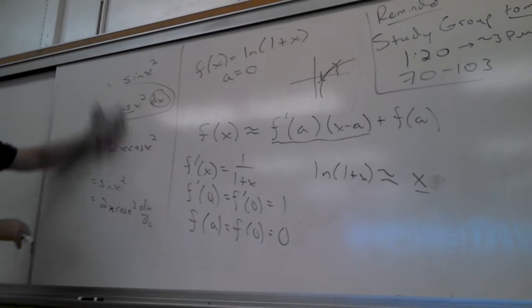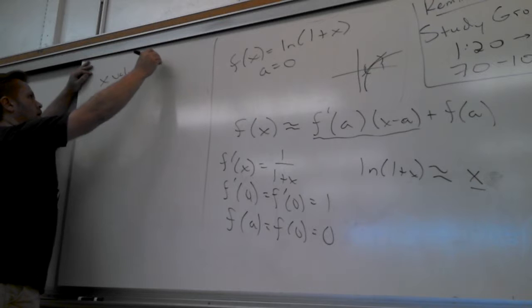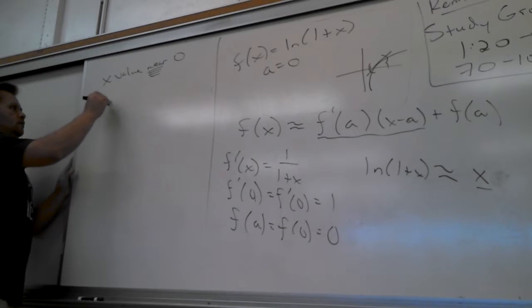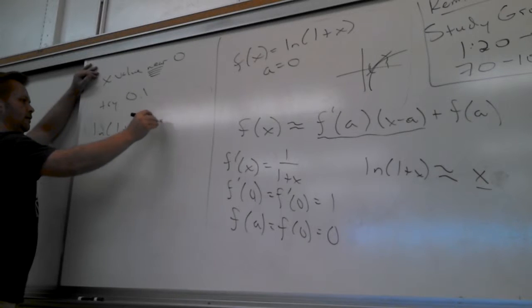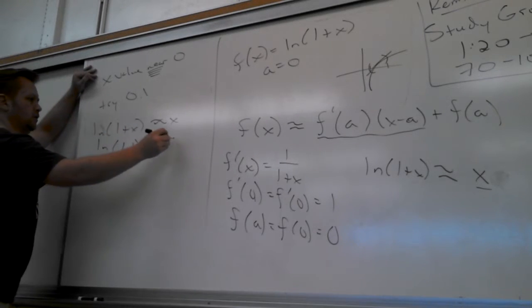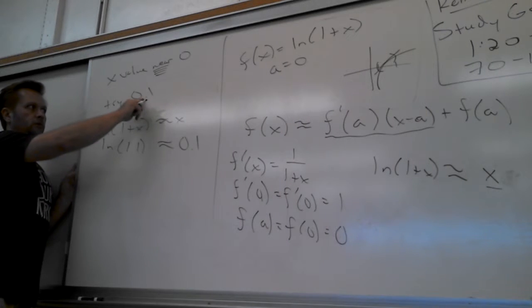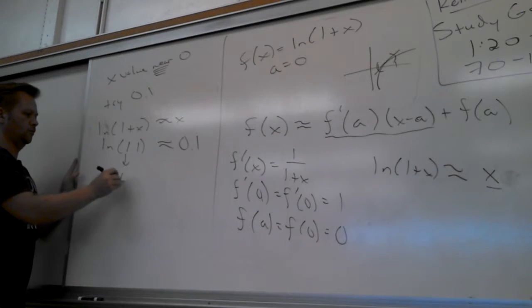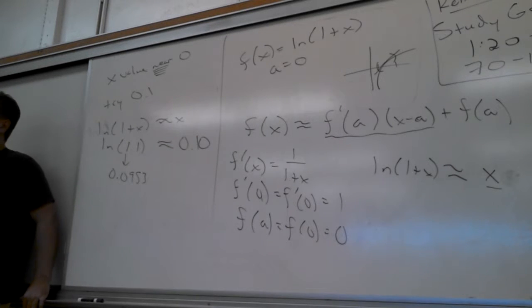So before we jump into the calculator, let's test this a little bit. Give me an x value near zero. Point one — you've got to understand what 'near' means. One is very far away from zero. Point one. So the approximation says natural log of (1.1) is approximately 0.1. What is ln(1.1)? It's actually 0.0953. So we're within about 0.005 — it's pretty decently close.